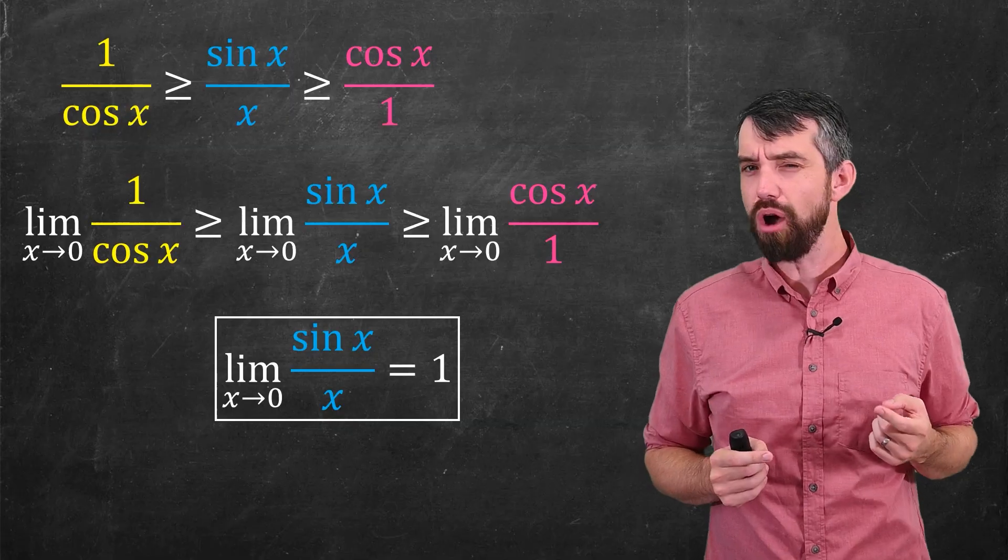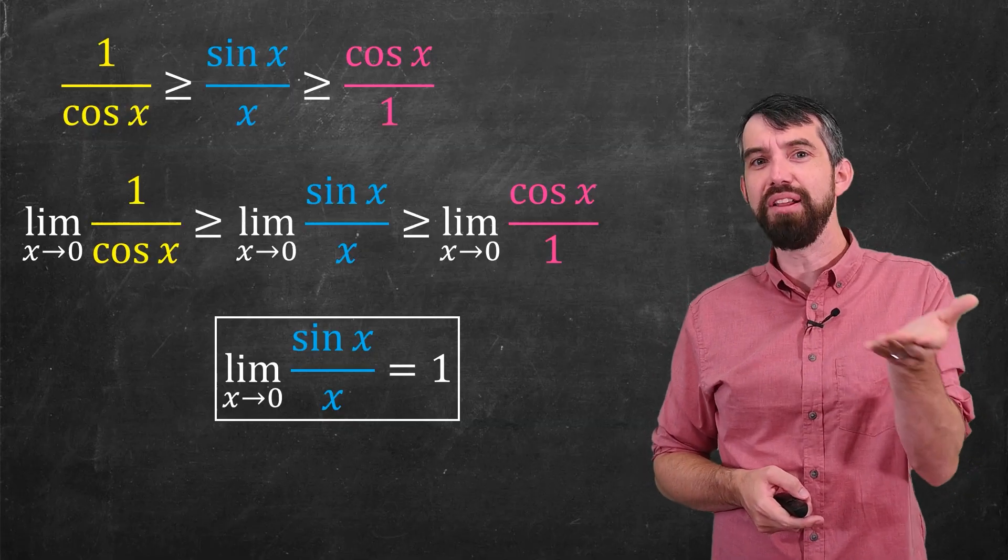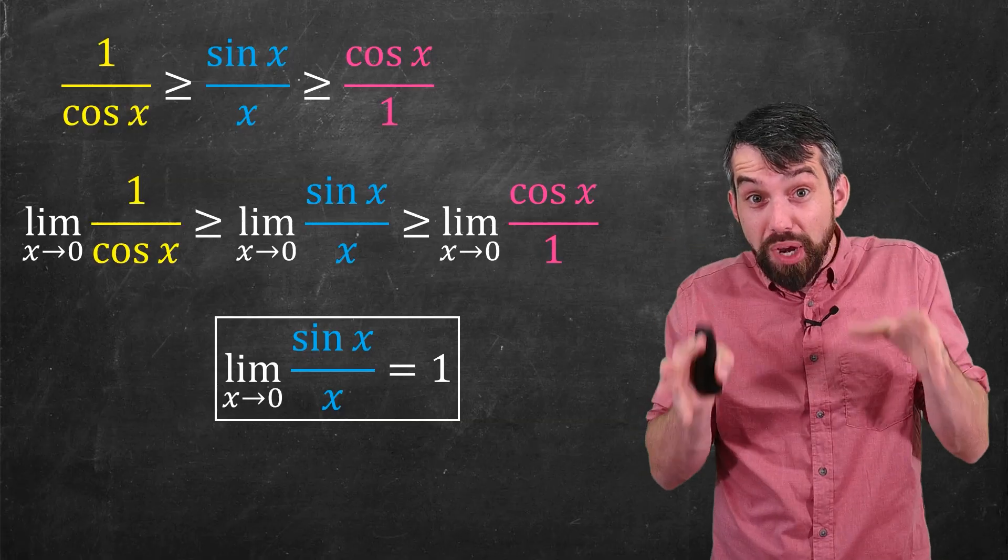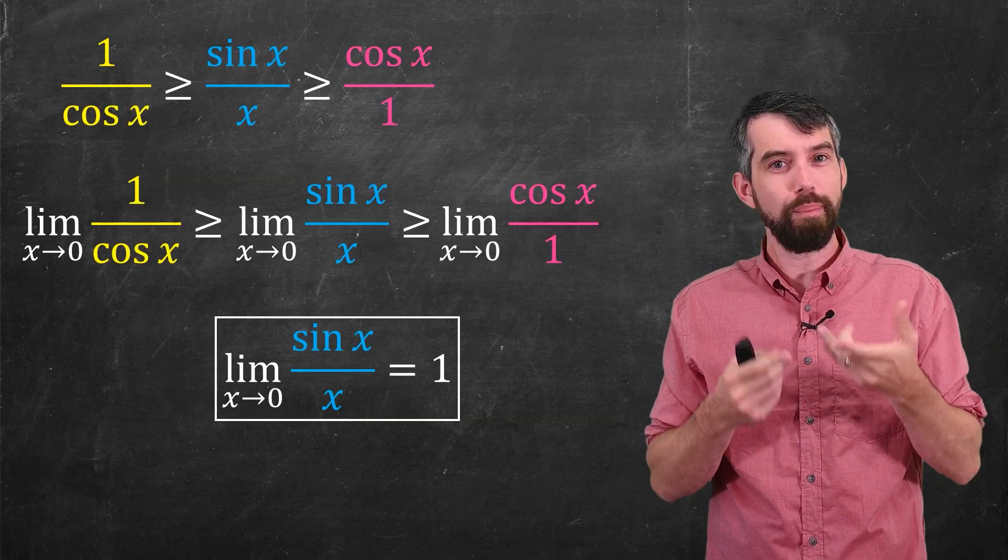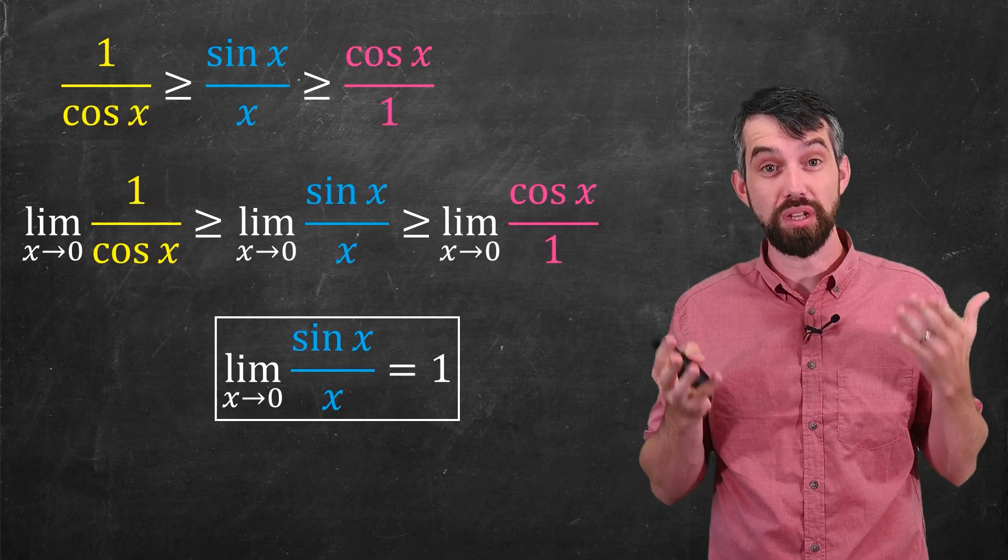Well, hold on. How do you even know that the derivative of sine of x is equal to cos of x? If you know that, like the Maple calculator does, then you can use L'Hopital's Rule. But why is the derivative of sine of x cos of x?